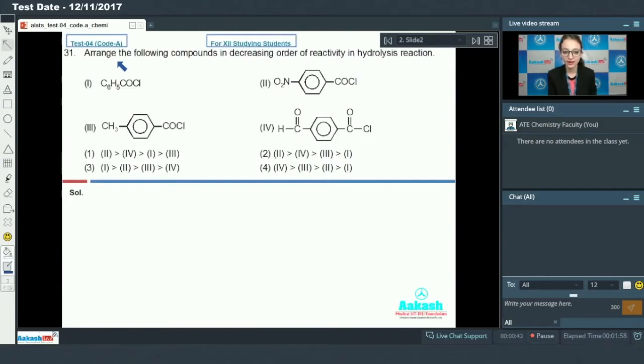Question number 31: Arrange the following compounds in decreasing order of reactivity in hydrolysis reaction. We have given four different compounds and we have to tell their reactivity in hydrolysis reaction.